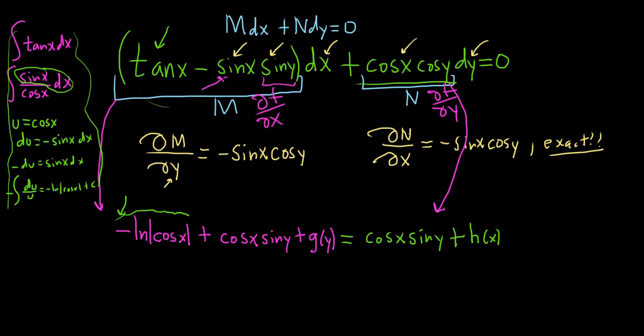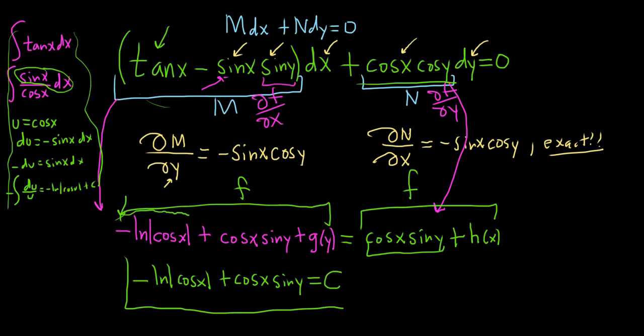Now we can write the answer down. Both of these are equal to f, so we pick the unique components from each equation. We have -ln|cos(x)| plus cos(x)sin(y)—we ignore the g(y) since we already included that term. At the very end, it's really important to set your answer equal to c. And that's it.